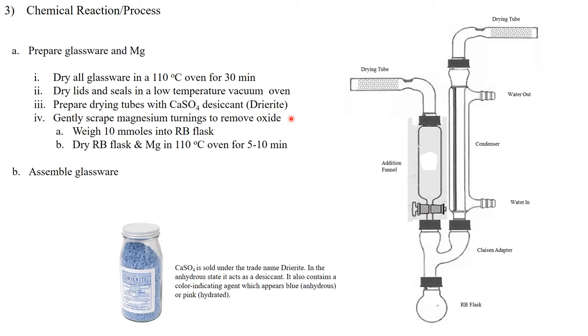So once we get that all set up we're going to weigh out our magnesium to prepare a Grignard reagent. We're going to weigh out approximately 10 millimoles and then we're going to scrape it to remove any oxide from the surface and then we're going to dry it also. So we're going to put it and the round bottom flask back in the 110 degrees Celsius oven and bake it for 5 to 10 minutes to remove any moisture from its surface.